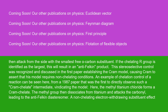This stereoselective control was recognized and discussed in the first paper establishing the Cram model, causing Cram to assert that his model requires non-chelating conditions. An example of chelation control of a reaction can be seen from a 1987 paper that was the first to directly observe such a Cram chelate intermediate, vindicating the model. Here, the methyl titanium chloride forms a Cram chelate. The methyl group then dissociates from titanium and attacks the carbonyl, leading to the anti-Felkin diastereomer.